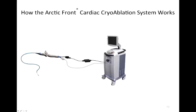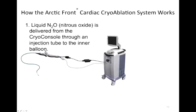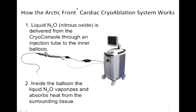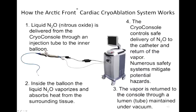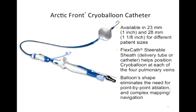The cryoballoon requires a large console with specialized equipment. The catheter is attached to that console and uses liquid nitrous oxide delivered from the console into the balloon inside the patient's left atrium. Inside the balloon it vaporizes and absorbs the heat, and then the vapor is returned back to the console through attached tubing. The catheters come in a couple of sizes — it's not one size fits all — and we've seen improvements, with the latest version being a much more flexible balloon.